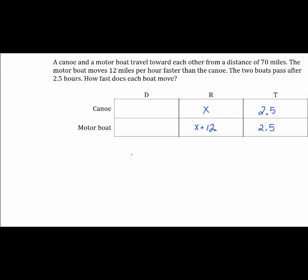Finally, we need to figure out how to fill in our distance column. We are given a distance of 70 miles, but in this case each boat does not travel 70 miles. Instead, we have a canoe starting point and a motorboat starting point. They're traveling toward each other, and if you add their distances together, you would get 70 miles.